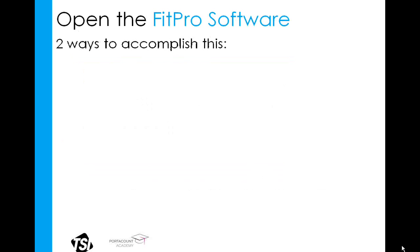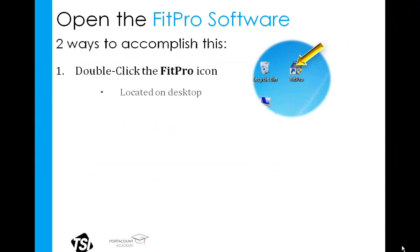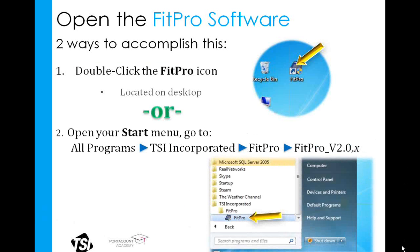Via your computer, we're going to open the FitPro FitTest software. This is typically done in one of two ways: either by double-clicking on the FitPro icon displayed on your desktop, or by opening your Windows Start menu and going to All Programs, TSI Incorporated, then FitPro, and then the FitPro icon as shown here.